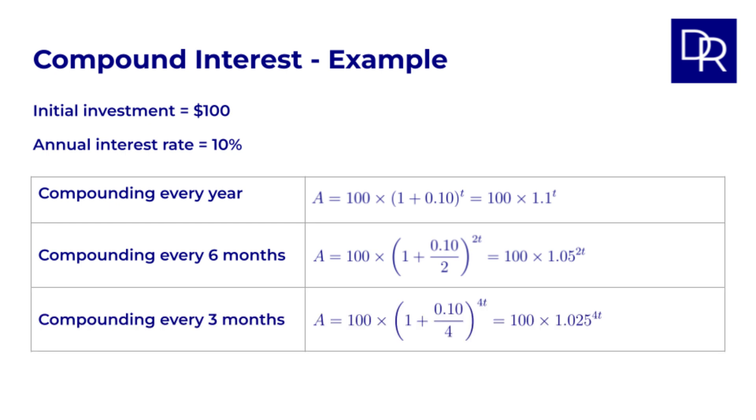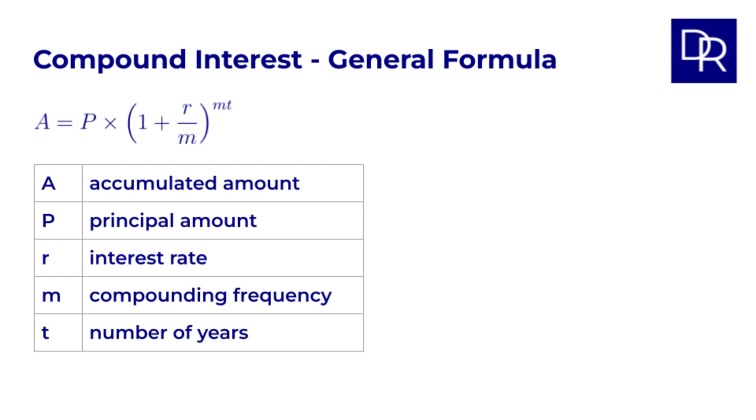If the interest is compounded quarterly, four times a year, then we divide the annual rate by 4, and multiply the number of years by 4. Let's now generalize all of this. If we start with a principal amount P, instead of our $100, and receive r percent interest for t years, compounded m times per year, then the accumulated amount A is P times (1 + r/m) to the power of mt.